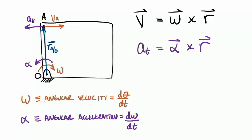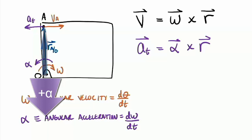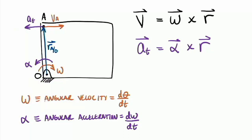Practice the right-hand rule using alpha crossed into R. Note that any cross product gives you a vector, so A_T needs vector notation. Alpha is coming out of the board; R is going upward. Curling fingers into R, the thumb comes to the left. Using three fingers: alpha out, R up, A_T to the left. Same fundamental relationship — an angular vector crossed into a position vector.